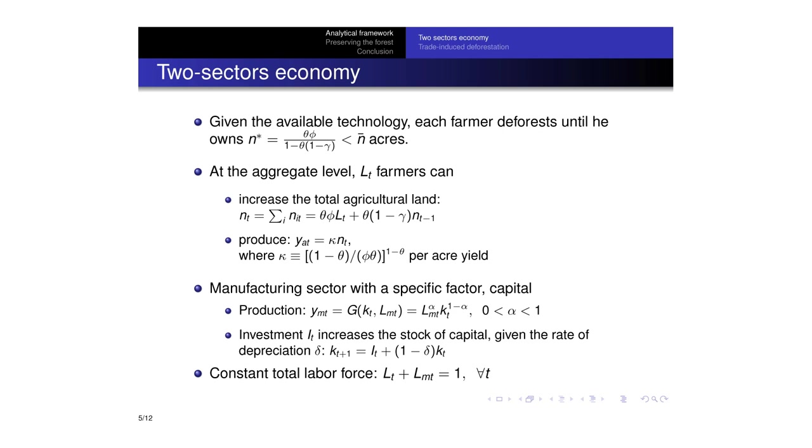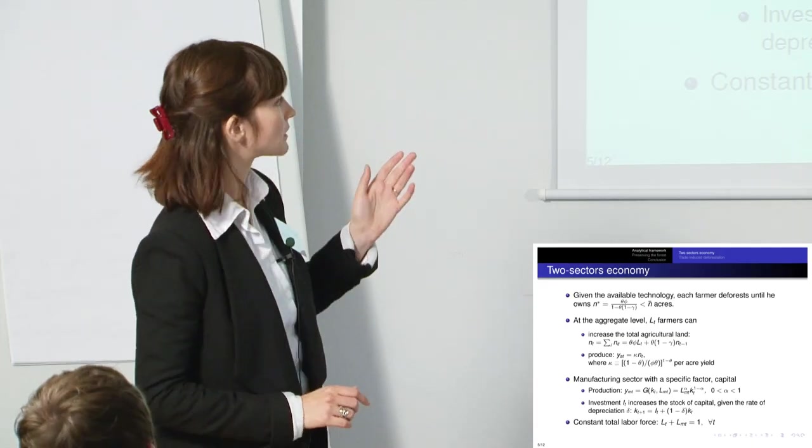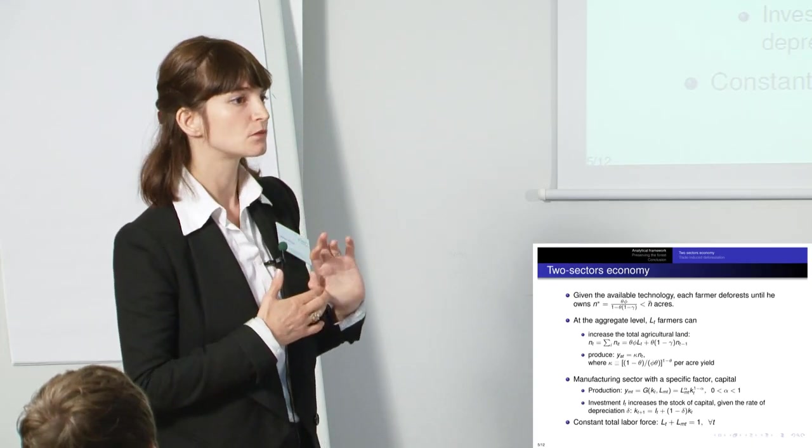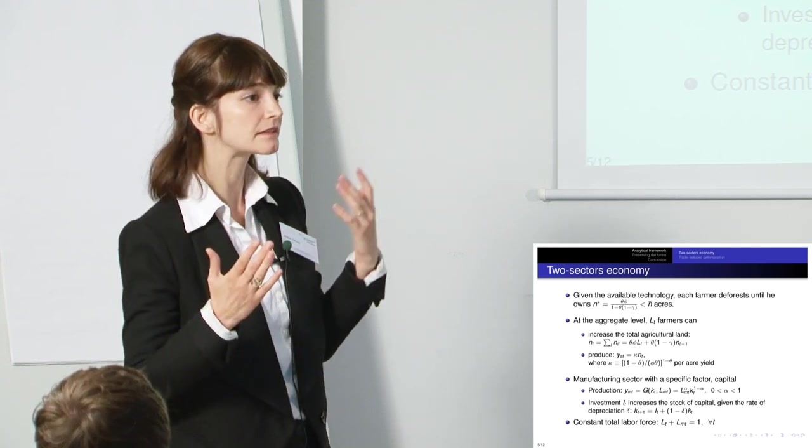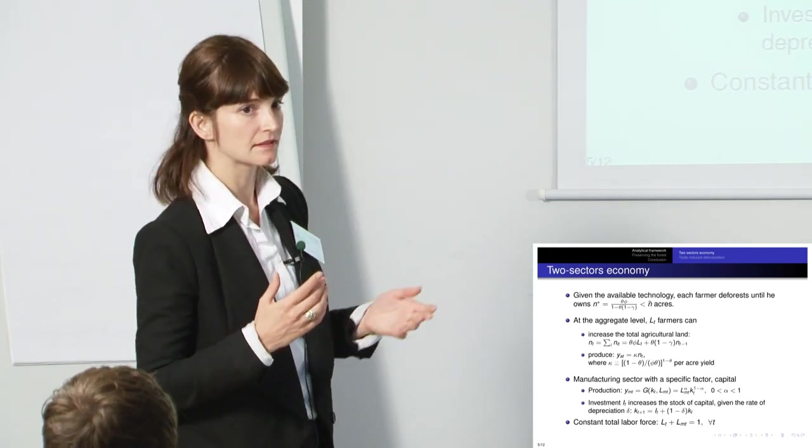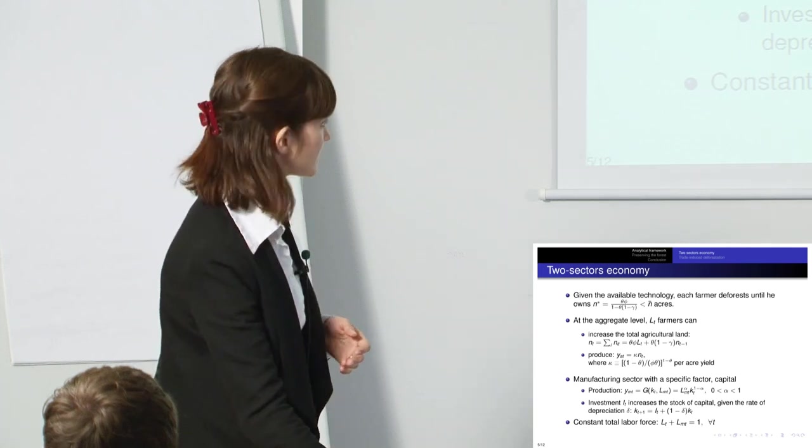The production function is relatively simple, it's linear in the size of the agricultural land. For the manufacturing sector, it's a very standard way of representing it. So I just have capital and labour, and capital can be accumulated through investment.